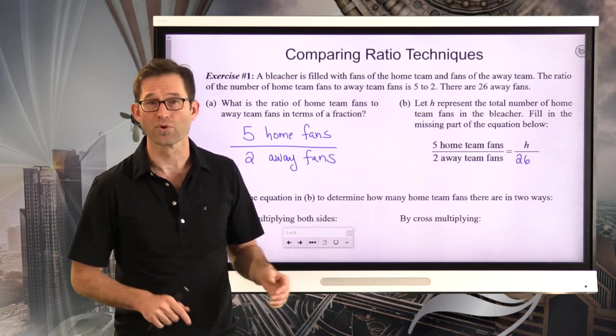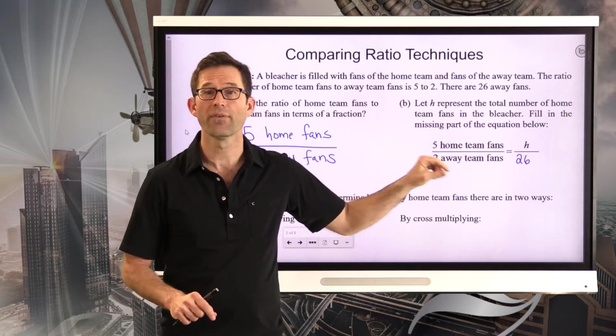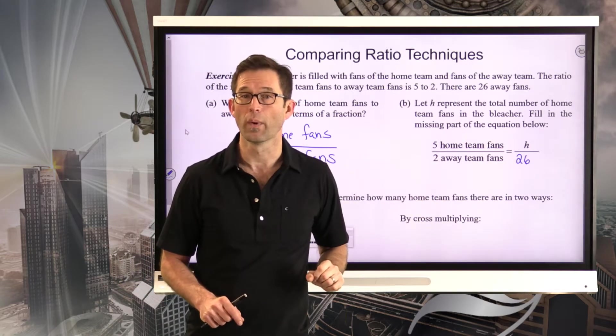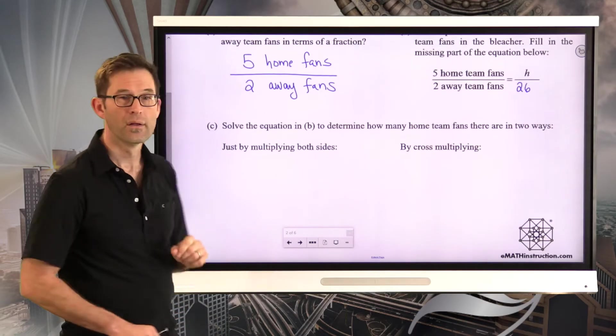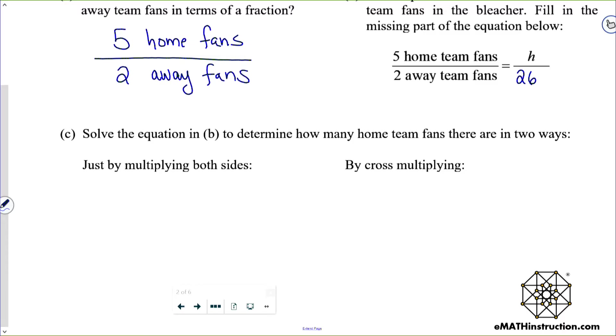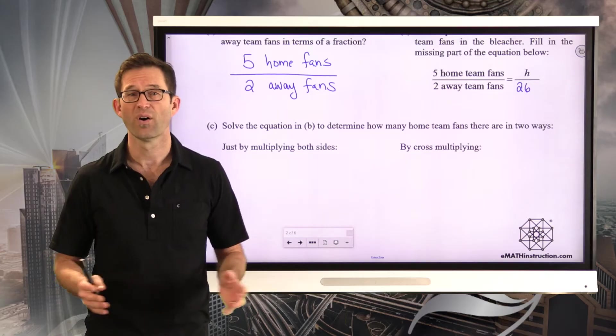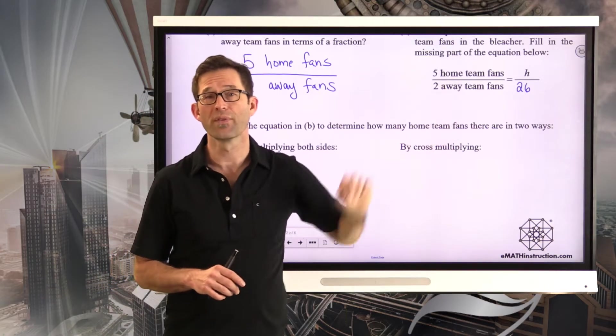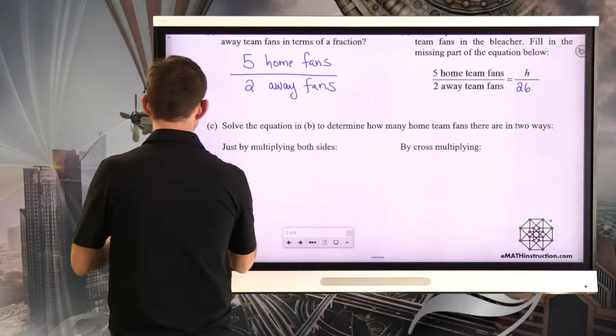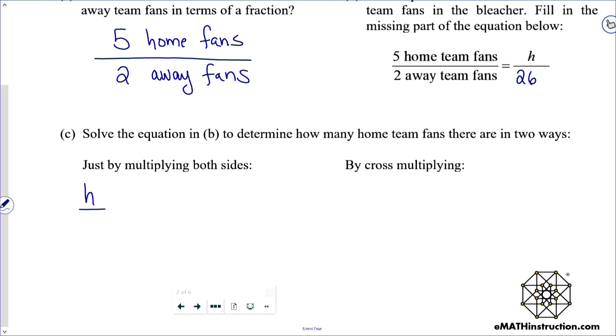Well, if H represents the total number of home fans, and I know there are a total of 26 away fans, then that's what I want down here. If I'm setting up equivalent ratios, 5 home team fans to 2 away team fans must be the thing I don't know, the number of home fans to the number of away fans. And now the beautiful thing is, I have something called a proportion, an equation that has a fraction, 5 halves equal to a fraction, H over 26.